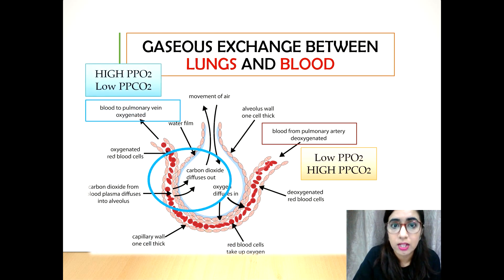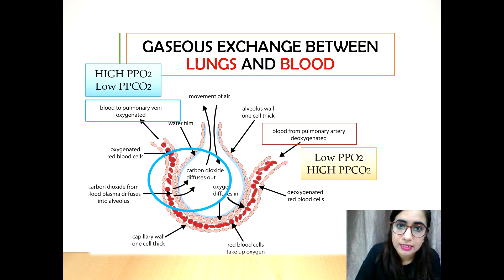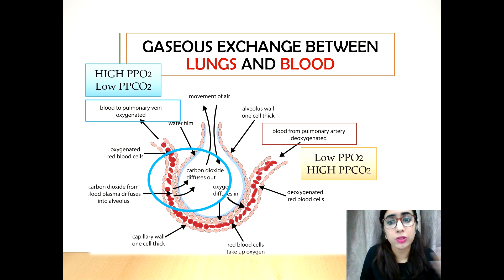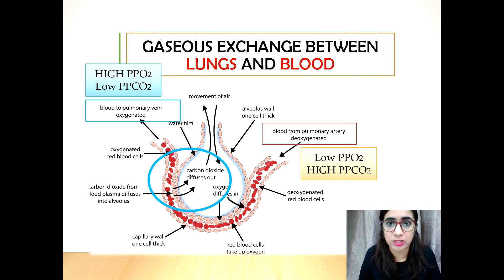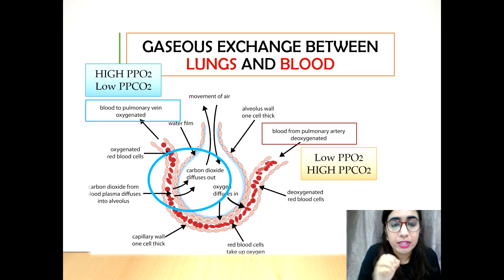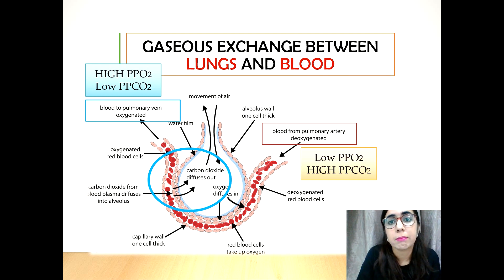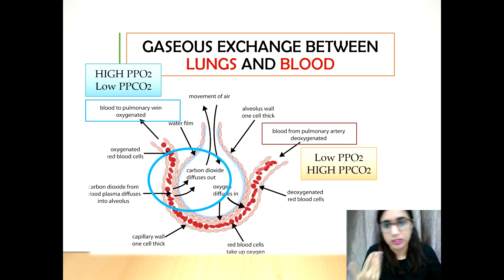Meanwhile, carbon dioxide from the blood capillaries diffuses following the partial pressure gradient into the alveoli to be excreted during exhalation — from high to lower partial pressure of carbon dioxide. This continuous process of respiration and blood flow from the pulmonary arteries through the blood capillaries is very important in maintaining the partial pressure gradient to ensure that external respiration between the alveoli and blood capillaries goes on continuously.